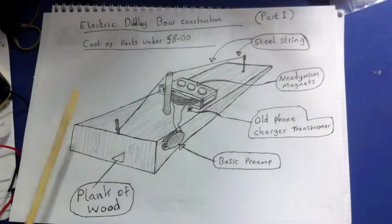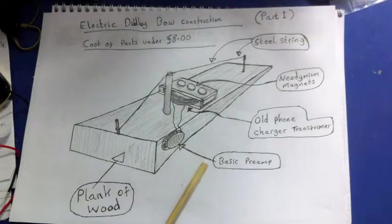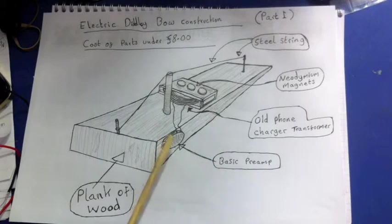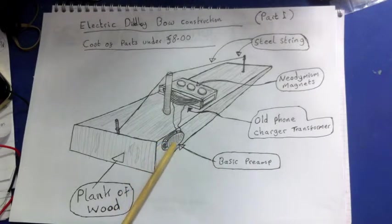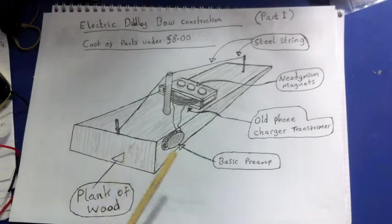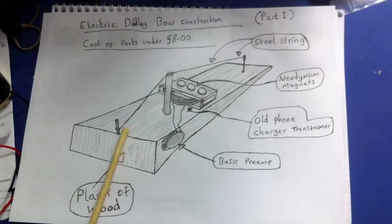So you've got an old phone charger lying around in the house. A basic preamp. Now the preamp is just going to consist of a transistor and about four or five resistors and a few capacitors. It's going to be really simple. And into that you can just plug a lead into that and plug it straight into a normal amplifier. Any old amplifier will do. So really that's the whole instrument.